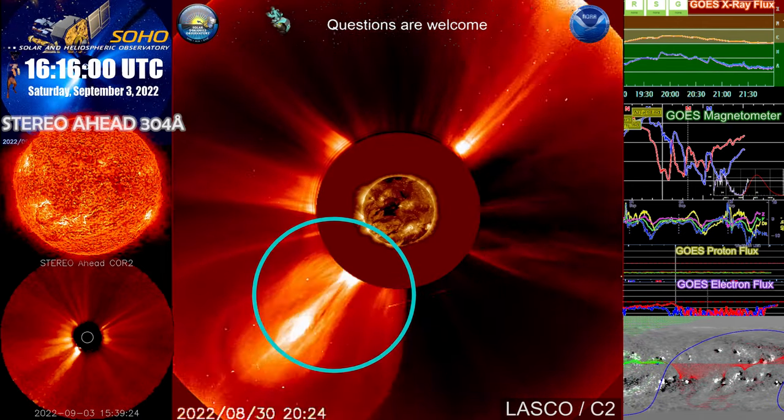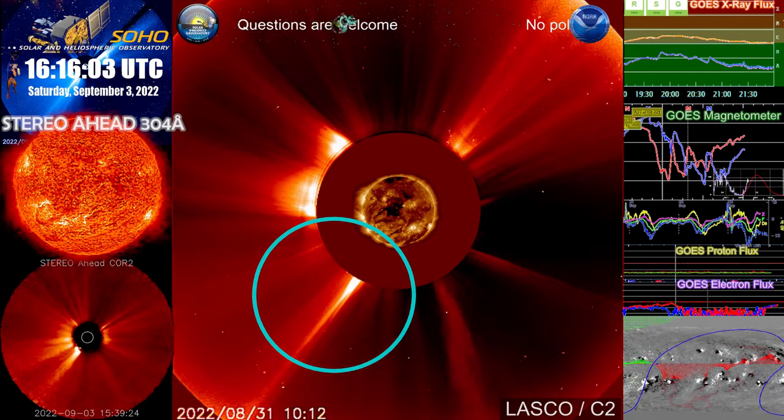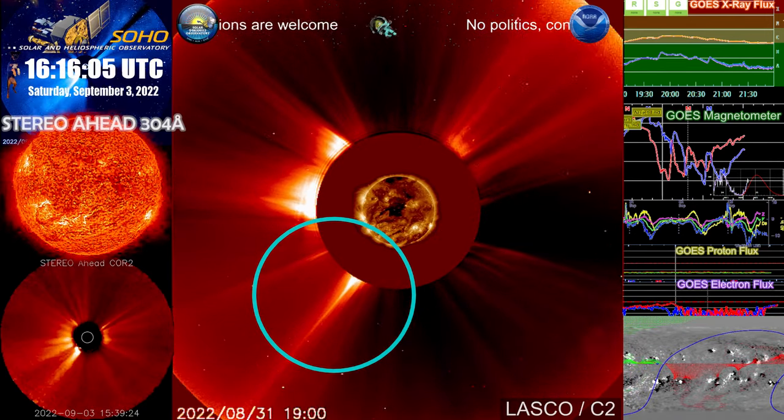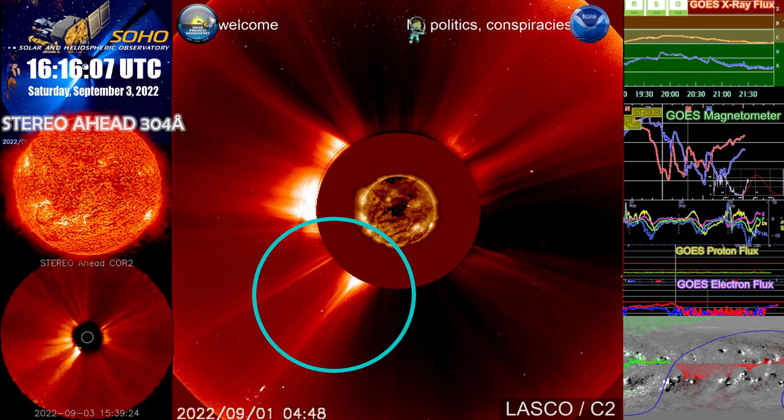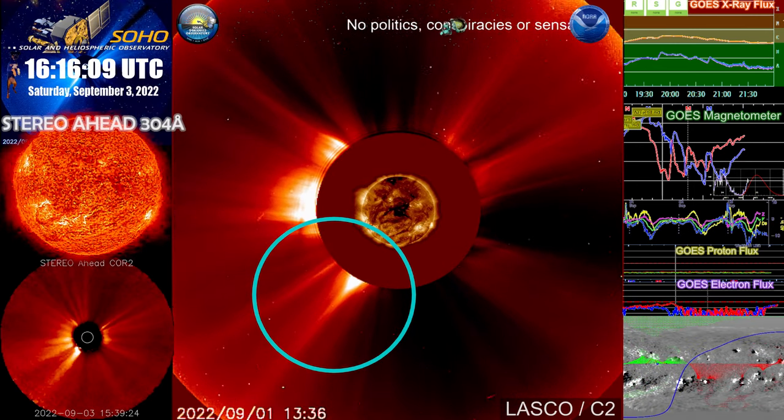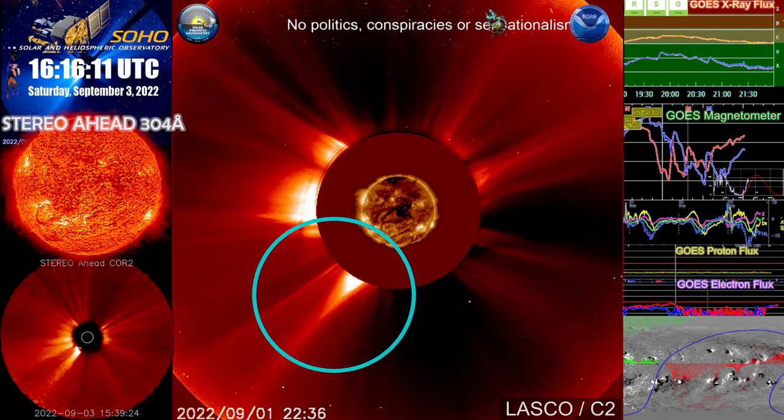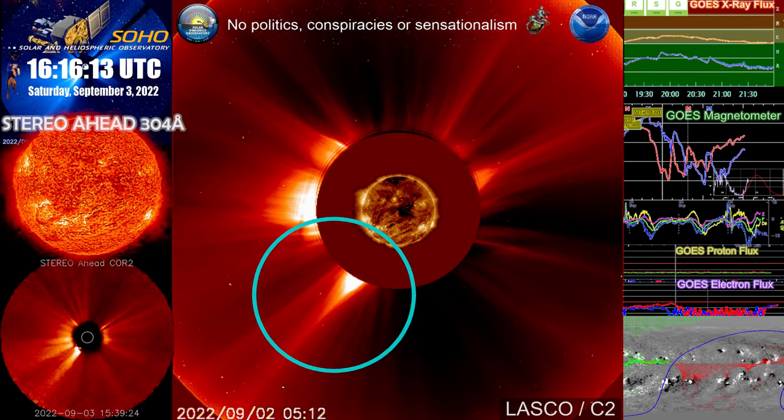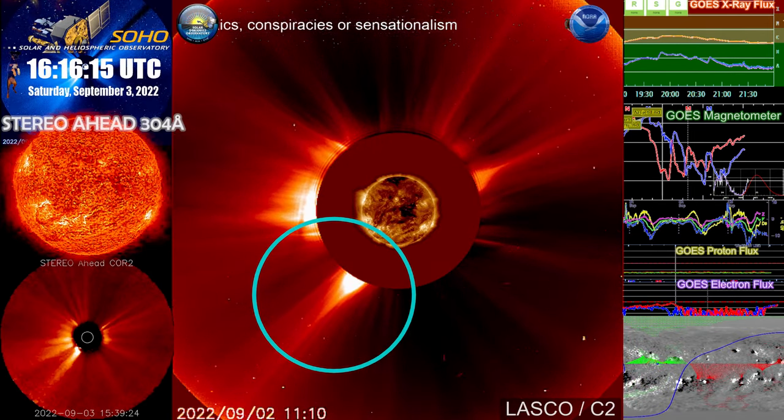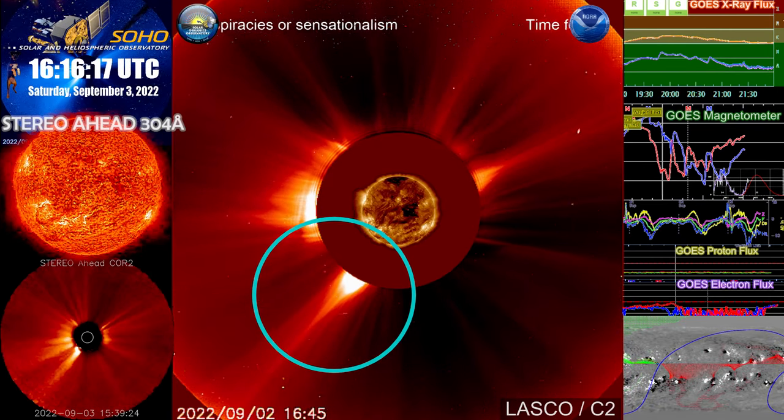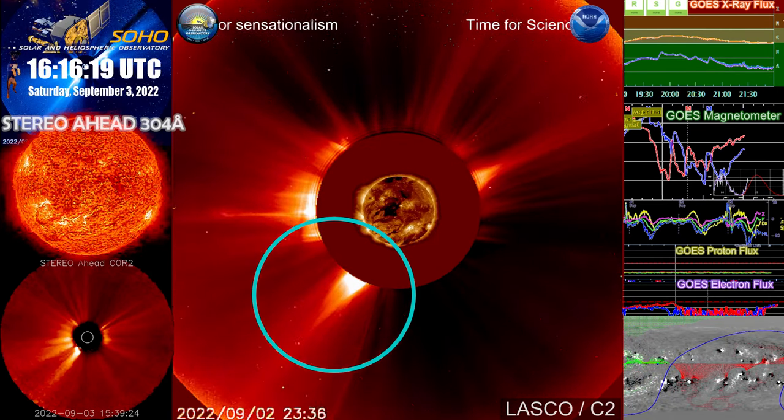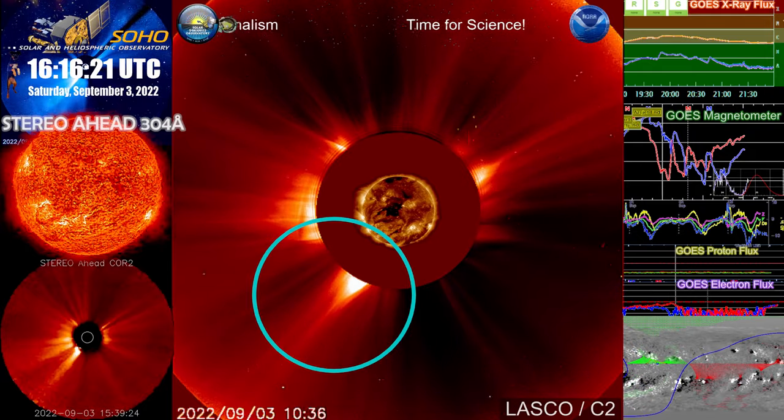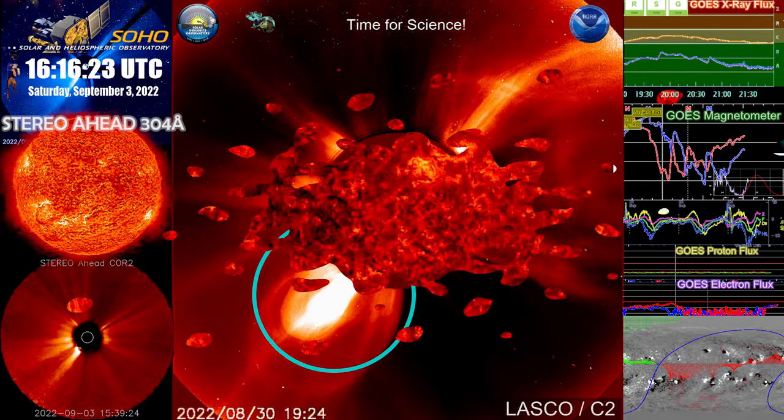based on the imagery from Stereo Ahead, from the GONG and GOES and ESTIO, this eruption does not appear to be heading towards Earth at all. But that plasma rain that went to the north looks quite fantastic. It took me a while to figure out exactly what that was occurring at that point.